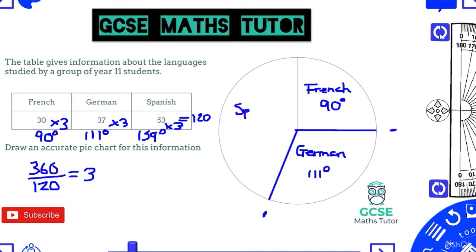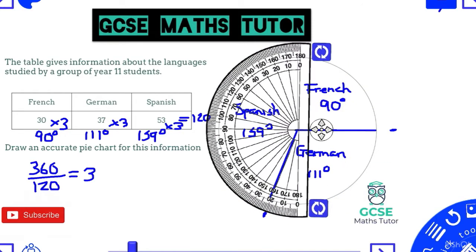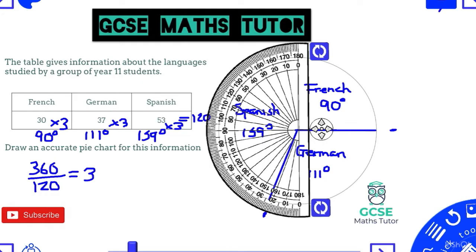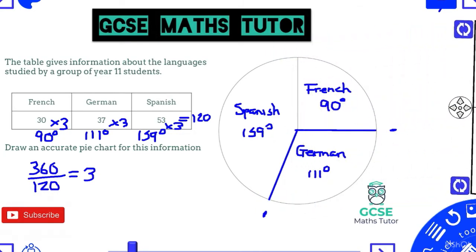The remaining section is Spanish at 159°. A good check is to place your protractor on that final angle to verify it measures 159° — mine comes out at around 159°, so I'm happy with that. As a further check: 90 + 111 + 159 = 360, confirming all angles are correct.